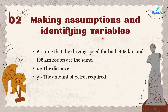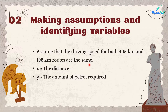Step 2 — Making assumptions and identifying variables: We assume that the driving speed for both the 405 km and 198 km routes are the same. Our variables are: x is the distance, and y is the amount of petrol required.